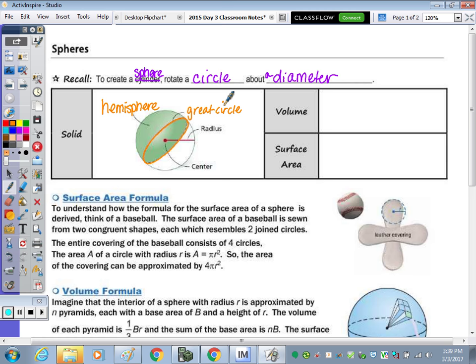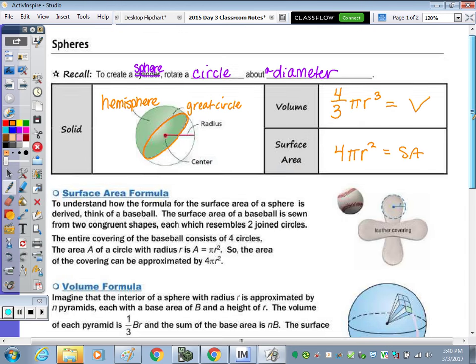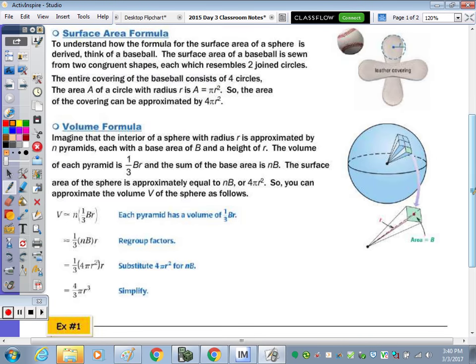If you look on your Common Core reference sheet, the reference sheet gives you the volume formula for the sphere. So the volume of a sphere is written as four-thirds pi radius cubed. And then the surface area is not on the Common Core reference sheet, but it is on the old reference sheet from the state, which I'll give you for your assessments. And that is 4πr². That's our surface area.